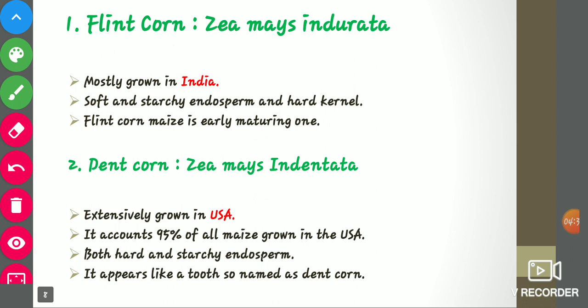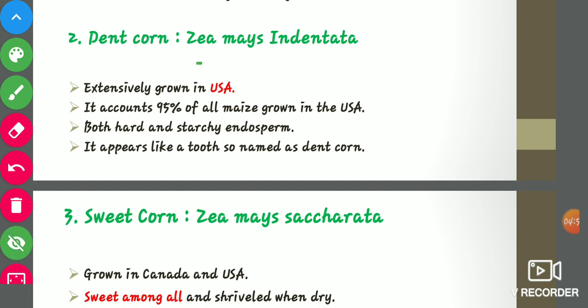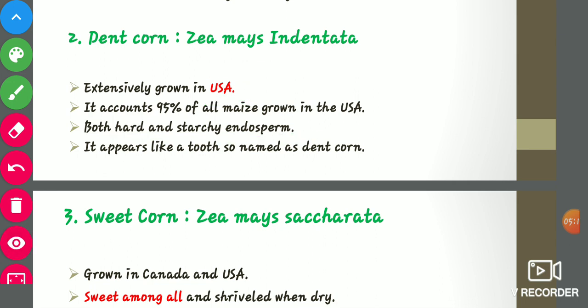Flint corn (Zea mays indurata) is mostly and extensively grown in India. It has a soft starchy endosperm and hard kernel, and is early maturing. Dent corn (Zea mays indenta) is extensively grown in the USA, accounting for 95 percent of all maize grown there. It has both hard and starchy endosperm and is soft and sweet. It is named dent corn due to its tooth-like appearance on the kernel.